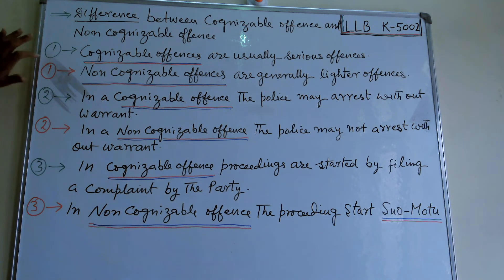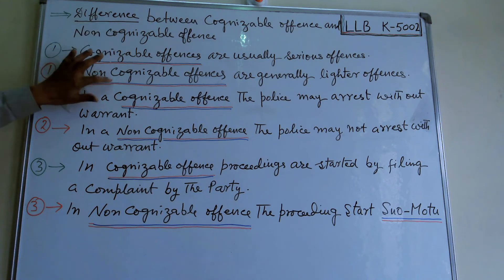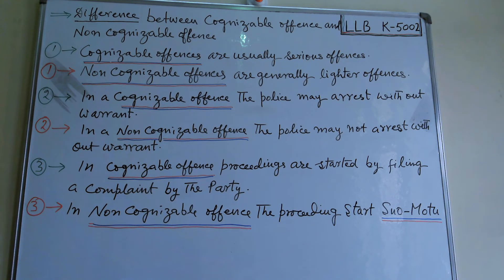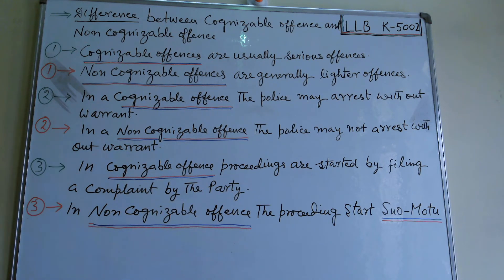Second point of difference: in a cognizable offense, the police may arrest without warrant, as defined in Section 2(c). In contrast, in a non-cognizable offense, the police may not arrest without warrant. This is the second difference between cognizable and non-cognizable offenses.